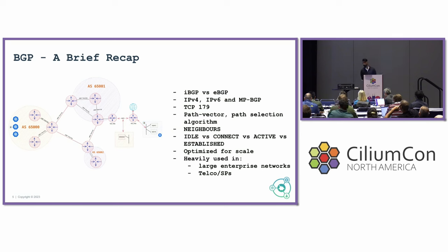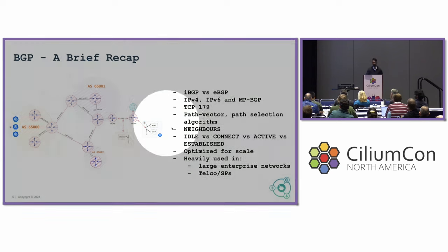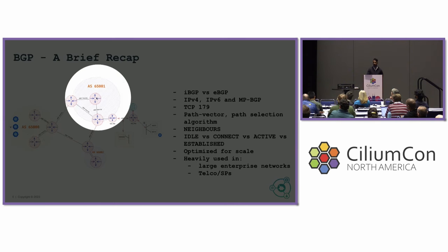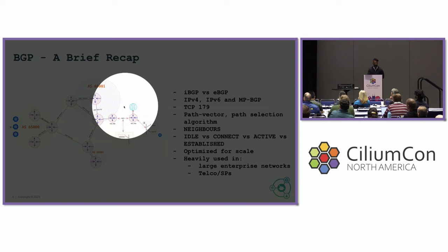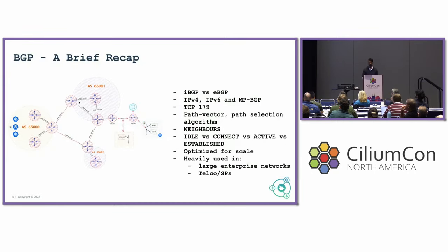BGP comes in two flavors: IBGP and EBGP. The difference is peering within an autonomous system versus peering between autonomous systems. When two autonomous systems talk to each other through an EBGP connection, two separate entities are exchanging networks at speed — they are isolated domains. When you have multiple routers inside an autonomous system, the links between them are IBGP peering, which is internal networking to exchange routing information.